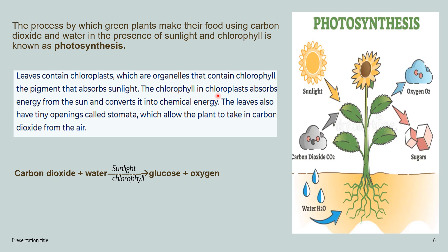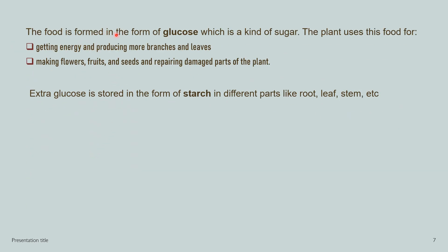The chlorophyll in the chloroplast absorbs energy from the sun and converts it into chemical energy. The leaves also have tiny openings called stomata, which allow the plant to take in carbon dioxide from the air and give out oxygen for humans and animals to use. This is why we should be thankful to plants.